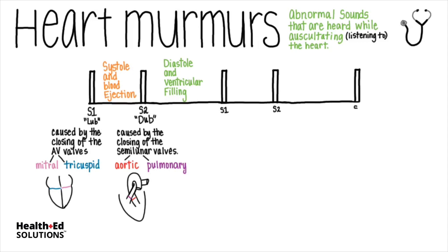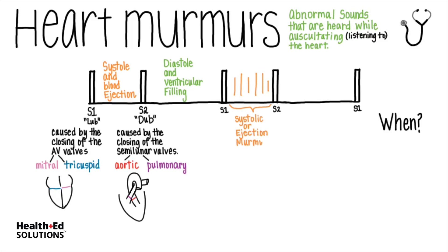If we draw out another cycle of heart sounds, we can consider how to classify heart murmurs or other abnormal heart sounds. First, we can listen to see when in the cycle the abnormal sound occurs. Abnormal sounds between S1 and S2 are considered systolic or ejection murmurs. Abnormal sounds that you can hear between S2 and S1 are considered diastolic murmurs.